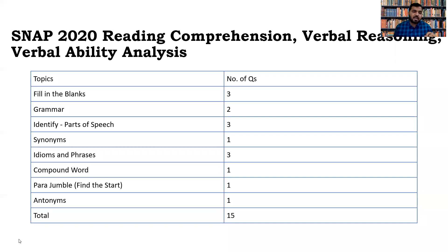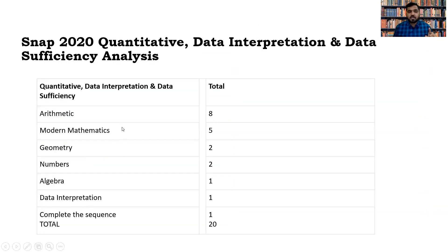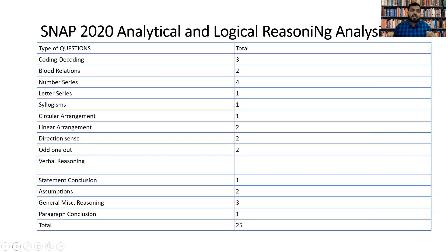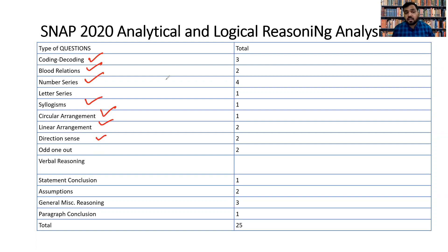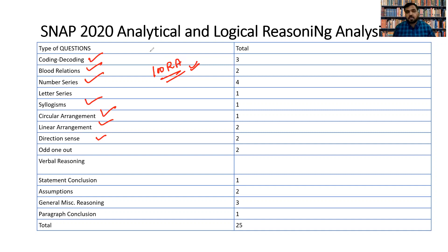For how I'll be helping with SNAP prep: for Quant I'm doing a 200 question series covering individual topics of Arithmetic, Modern Math, Geometry, Numbers, Algebra, and Data Interpretation. For Logical Reasoning, I have already uploaded 100 questions covering Coding-Decoding, Blood Relation, Number Series, Clocks, Circular Arrangement, Linear Arrangement, Direction Sense, Calendars, and Input-Output. That reasoning ability video is already available on this channel — the link will be in the description.